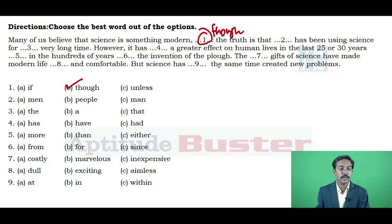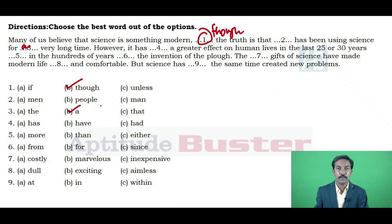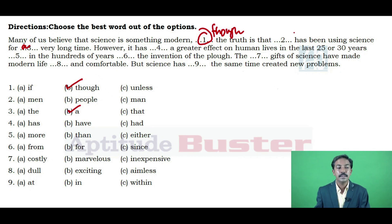As you read, you would unconsciously provide the word for the third blank — 'for a very long time.' So we get the right answer for blank one and blank three. For blank two: 'The truth is that dash has been using science.' Who would be using science? Obviously, people. The options are: option A — men, option B — people, option C — man. Since 'has been' indicates a singular verb, we should look at the structural clue. We can eliminate 'men' and 'people' because they take plural form. The right option for blank two is option C — 'man.'